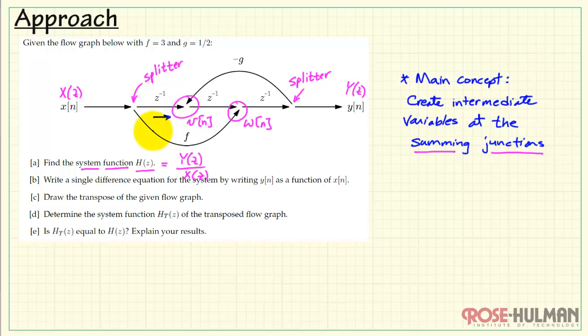As x of n passes through the delay line, that's going to change it to x of n minus 1. We would then multiply minus g times the value that's seen here, and that would be y of n. That means we can write our first difference equation: v of n equals x of n minus 1 minus g of y of n. In a similar fashion, we would write a difference equation for w of n, and then we recognize that y of n is really a modified version of w of n.